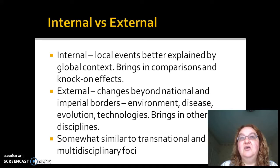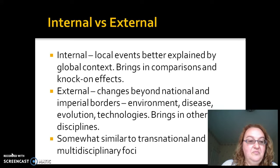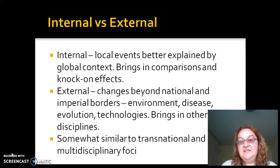This brings in comparisons between different places and looks at knock-on effects — how a massive event in one place can have a ripple effect producing different local effects on a global scale. He also talks about external foci — changes that take place beyond anything you could define as a national or even an imperial border. So big changes in environment, like the Little Ice Age in the 14th century, impacted the world differently. Sticking with the 14th century, we have the Black Death — a massive disease event which caused the death of between a third and a half of the population in affected places.